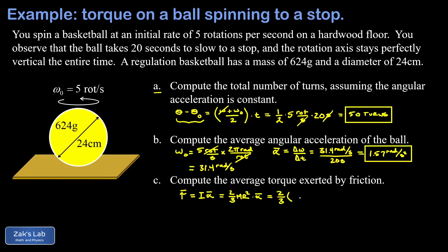So the mass in kilograms is 0.624 kilograms, and the radius—again we have to be careful because we were given the diameter—the radius is 12 centimeters, which needs to be written as 0.12 meters.